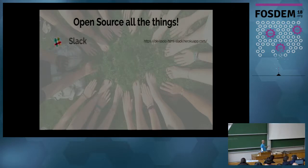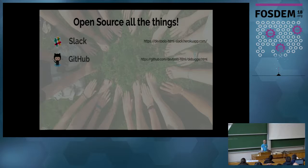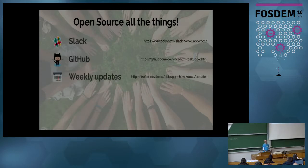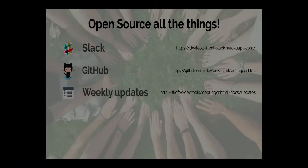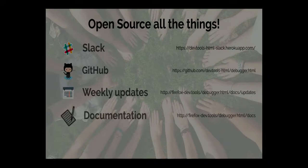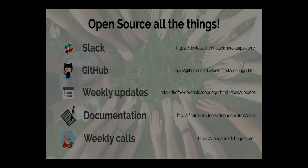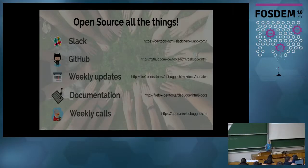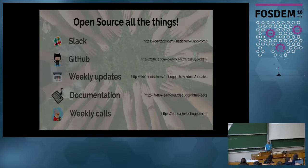There are many ways to engage with the project. There's a Slack channel and it's all on GitHub — no more Bugzilla, no more Mercurial. There are weekly updates so when you come back after a week or two you can read what people have done. There's a lot of documentation. And there are weekly video calls where you can see the team and other contributors — no judgment, no criticism — just hang out, chat a bit, and get to understand what's going on.